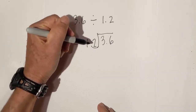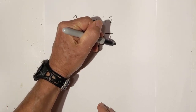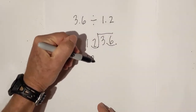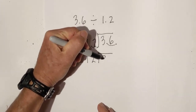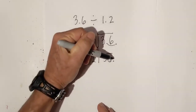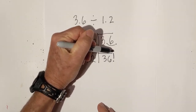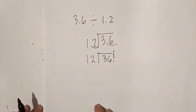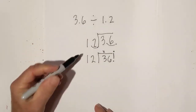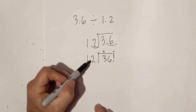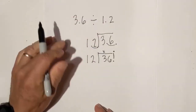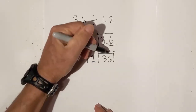Now we have 12 dividing into 36, and the decimal point is right there, so I move it straight up. 12 will not go into 3, but 12 times 3 is 36. So going through long division: 36 divided by 12 is 3.